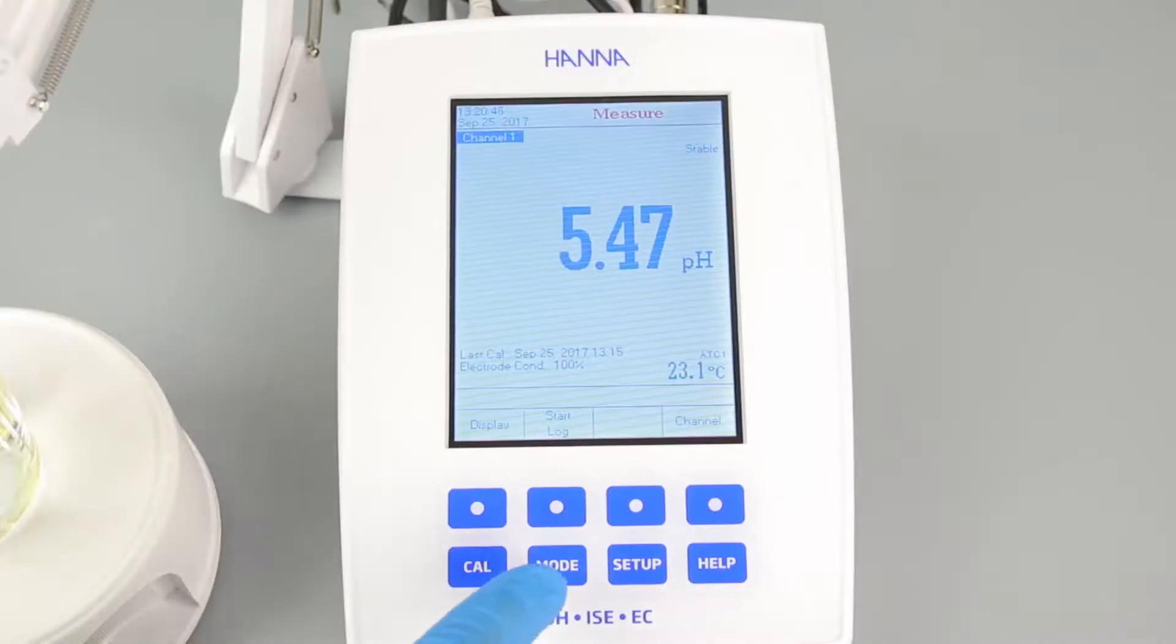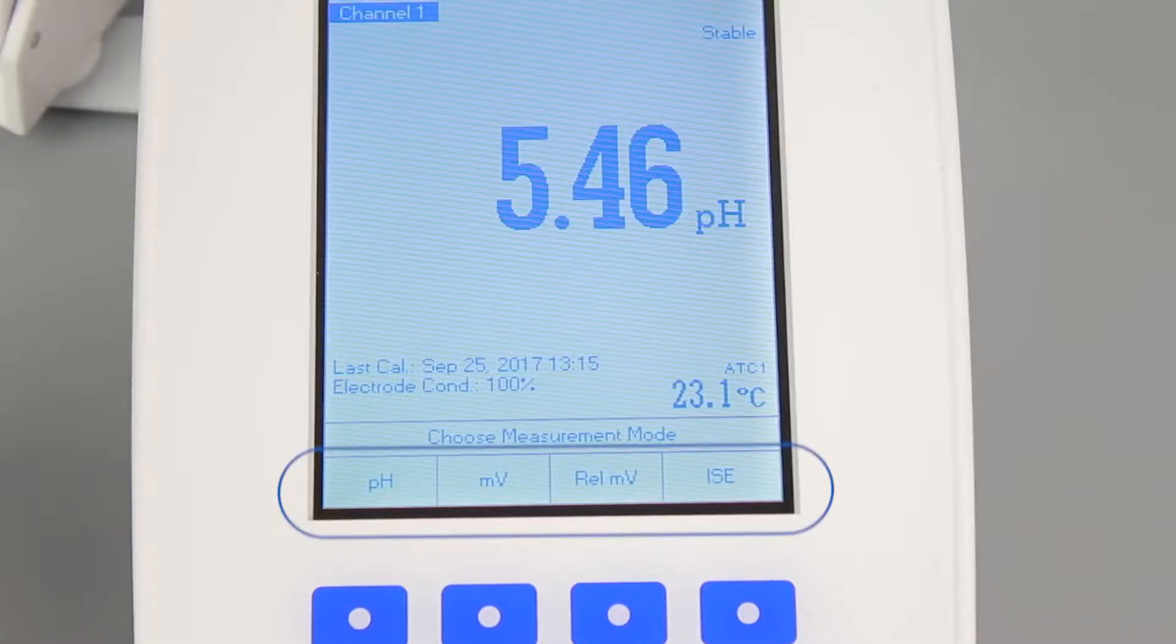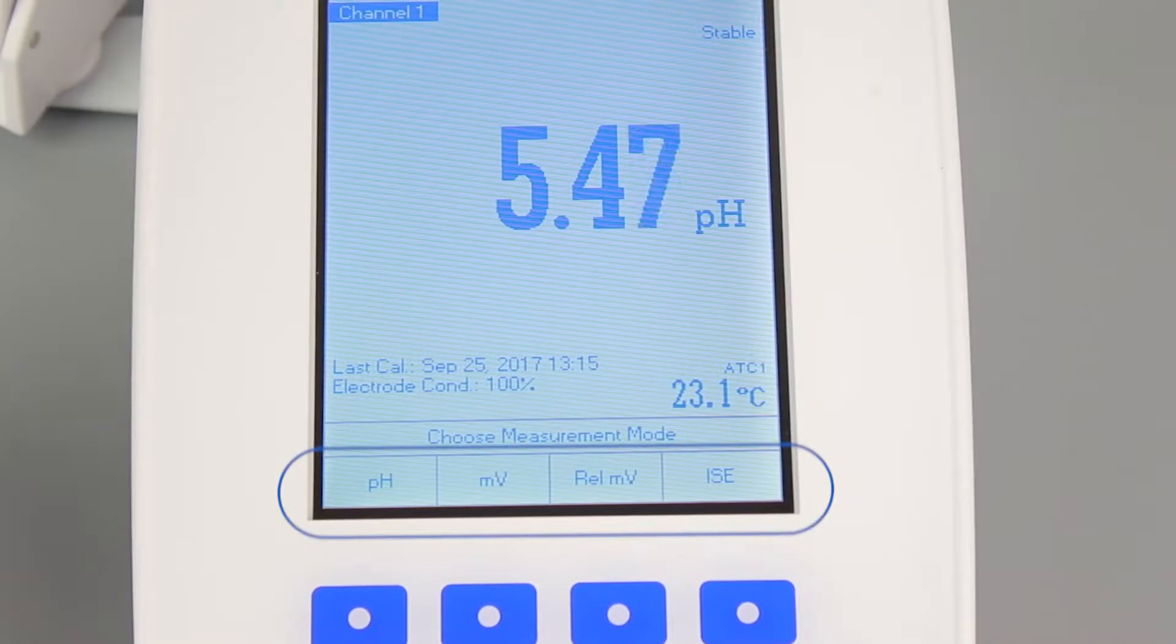Place the electrodes into your sample and wait for a stable reading. Once stable, you can press MODE to switch between pH, millivolt, relative millivolt, and ISE.